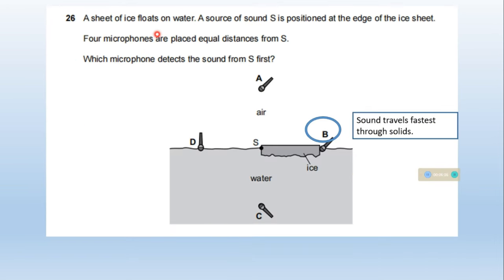A sheet of ice floats on water. A source of sound S is positioned at the edge of the ice sheet, and four microphones A, B, C, D are placed equal distances from S. Which microphone detects the sound from S first? The microphone at B will detect the sound first because sound travels fastest through solids. For D and C the medium is air and water. Option B is correct.